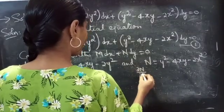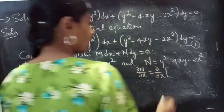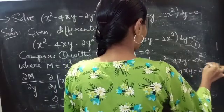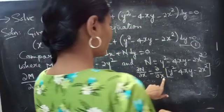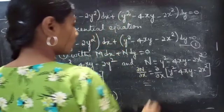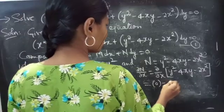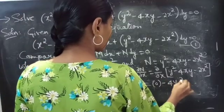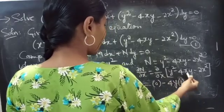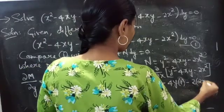Now differentiating N with respect to x, we treat y as constant. The derivative of y squared with respect to x is 0, minus 4y times the derivative of x is 1, minus 2 times the derivative of x squared is 2x. This equals to minus 4y minus 4x.